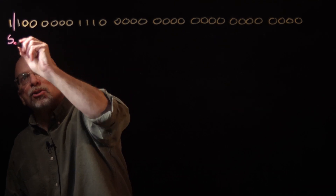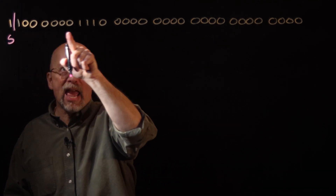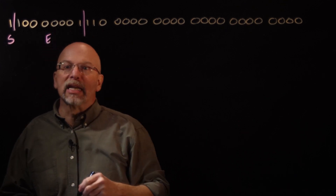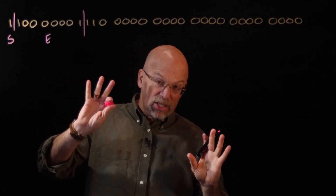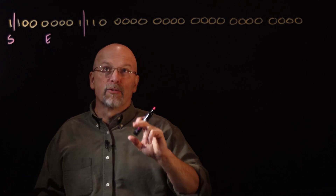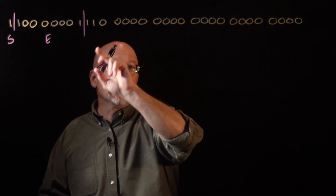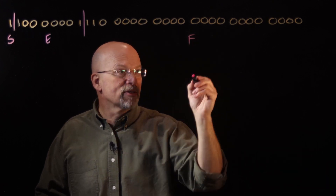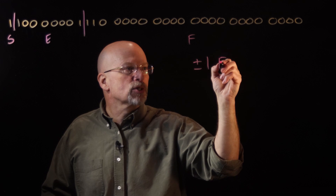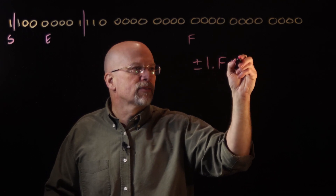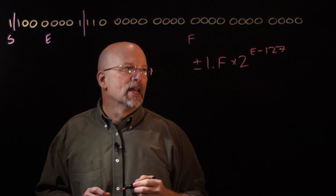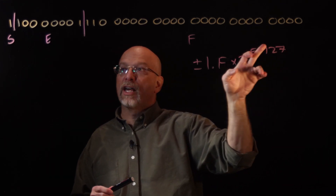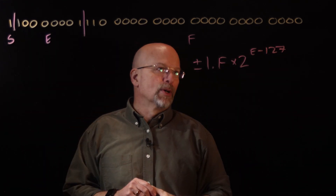The first bit is our sign bit. Then the next eight bits are our exponent in bias notation. For single precision, this bias notation is bias 127. And then we have the remaining 23 bits, which is our mantissa, represented with F. All we needed to do was substitute into the expression: plus or minus 1.F times 2 to the E minus 127. That minus 127 gives us our bias for exponent E.